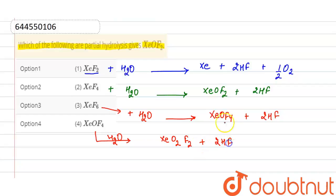fluoride. So from the given options, the correct option will be xenon tetrafluoride. XeF4 on partial hydrolysis gives xenon oxydifluoride. So the correct option is option 2. Thank you.